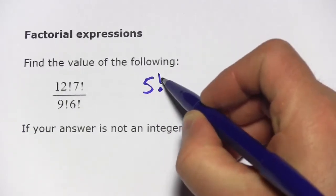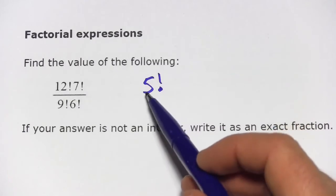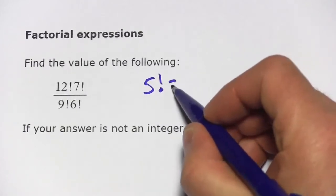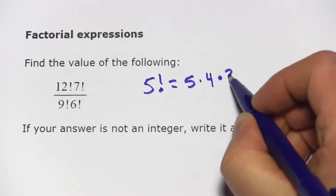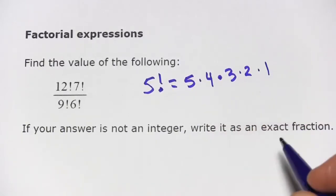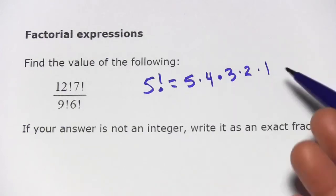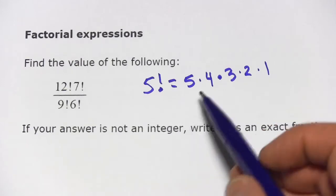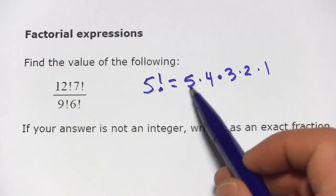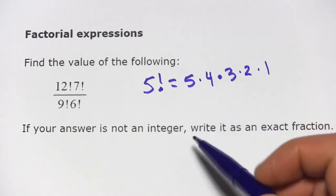So if I have this 5 and an exclamation mark, that's said 5 factorial. And what it means is 5 times 4 times 3 times 2 times 1. And actually, that last times 1 isn't really meaningful because it keeps everything the same. But that's the basic form of a factorial. You take all of the numbers from that number down to 1 and multiply them all together.